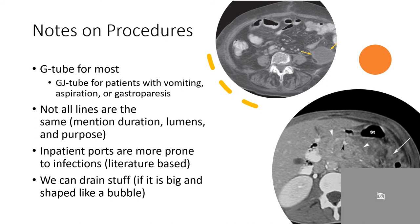Before we conclude, here are a couple of quick pointers regarding commonly asked questions to the IR service. G-tubes can be used in most instances. J-tubes are for patients who have aspiration risks, vomiting, or gastroparesis, because it bypasses the pylorus. It is not for everyone because feeding through the J-tube requires slow and continuous feeds to prevent dumping syndrome.